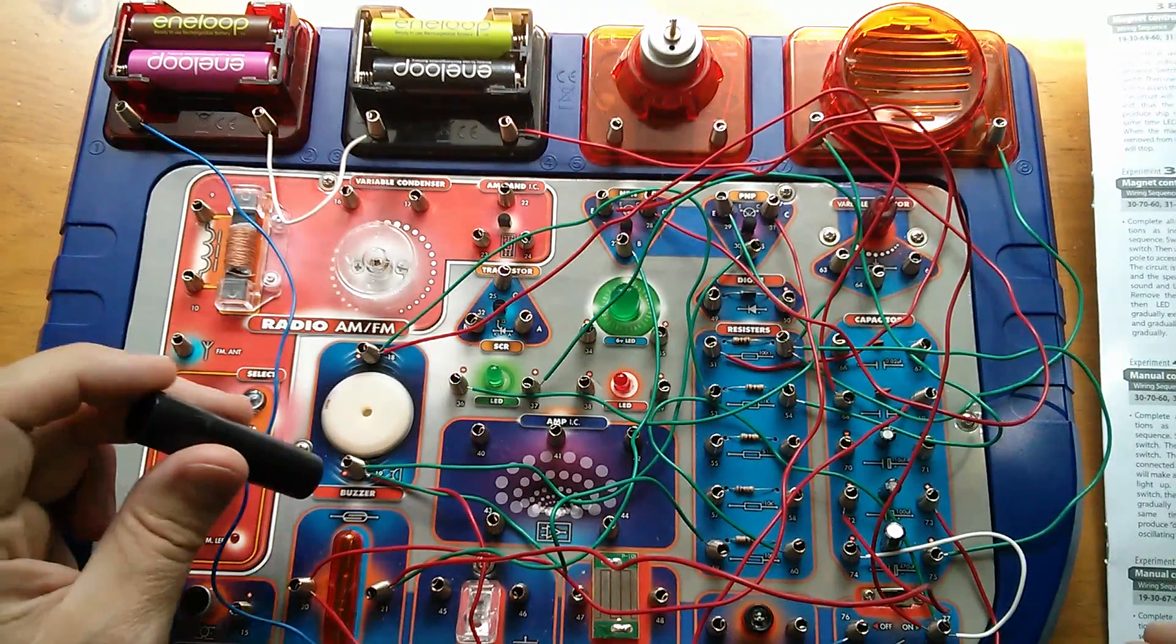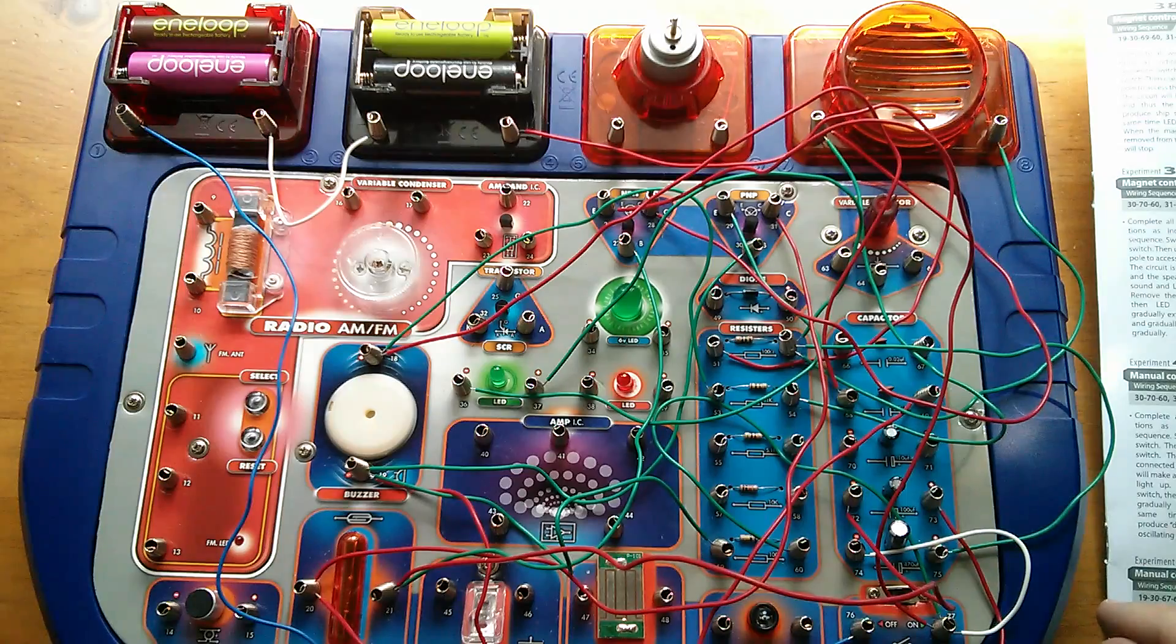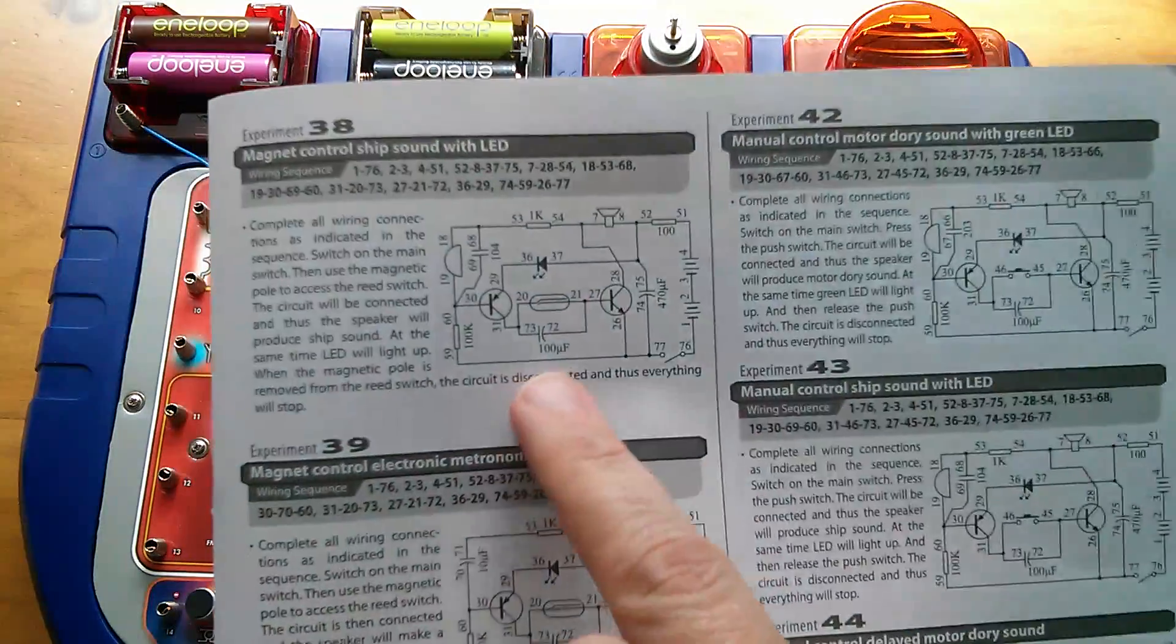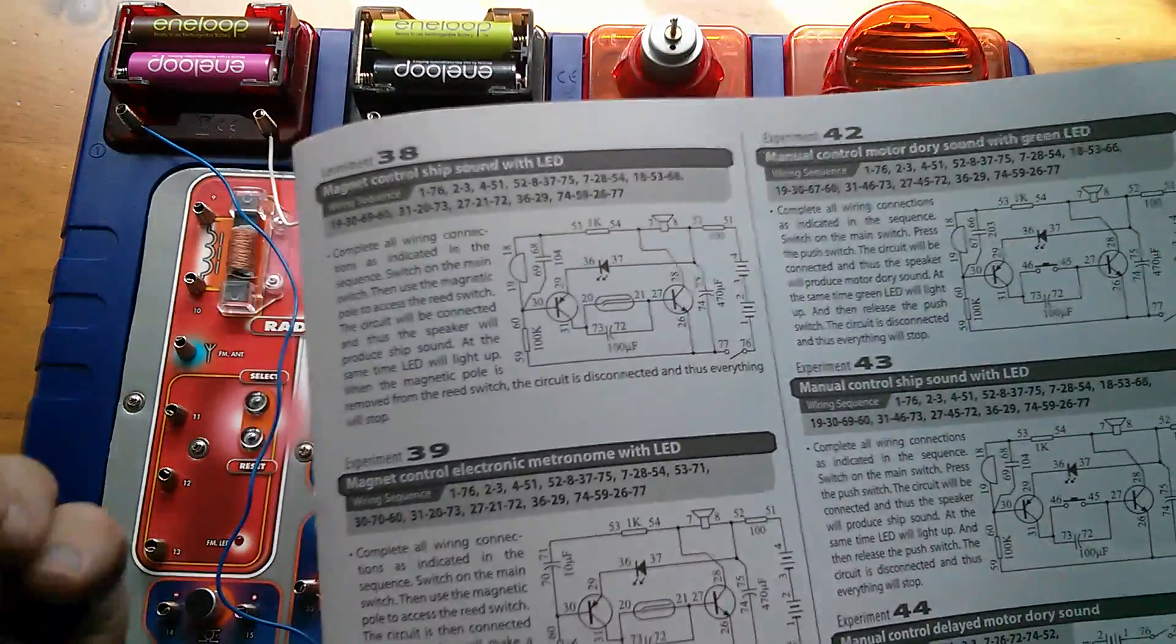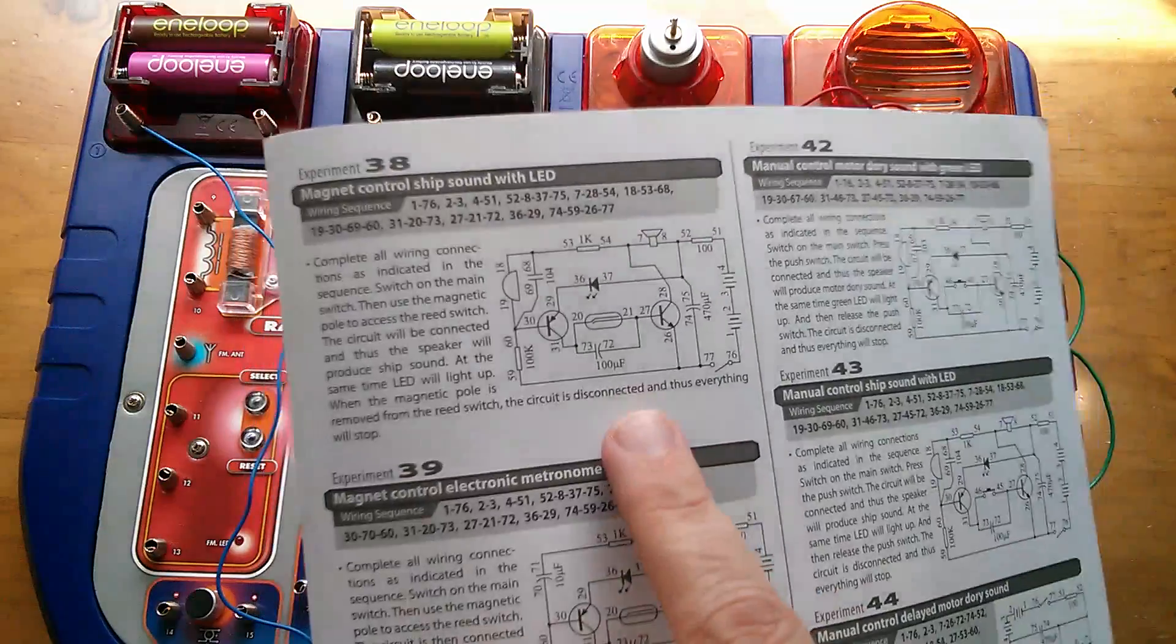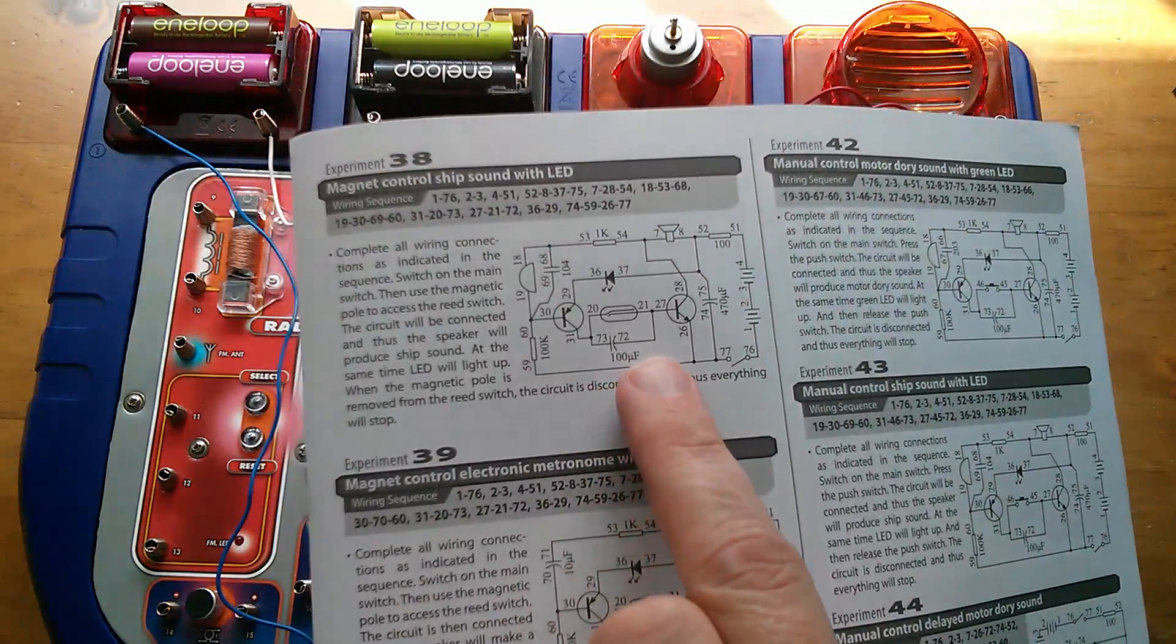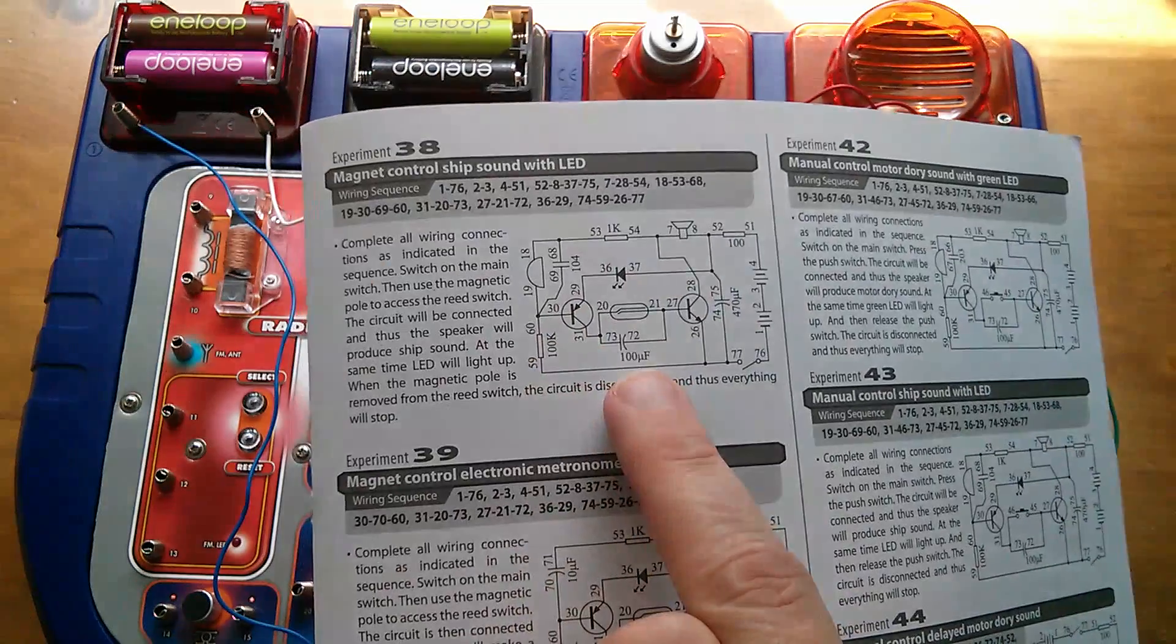So, let's just check that's working again. Yep, that's absolutely fine. So, how does this work? Well, the reed switch is across that capacitor. So, when I put the magnet on the reed switch, we get that low frequency sound. So, with no voltage across this capacitor, it produces the low frequency sound.